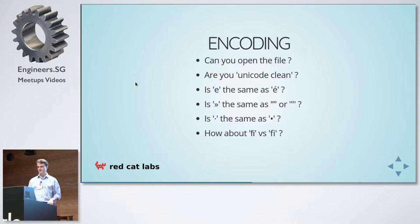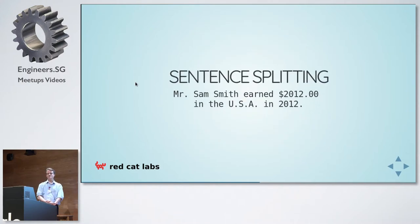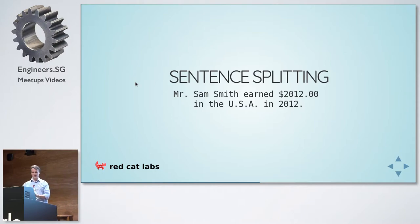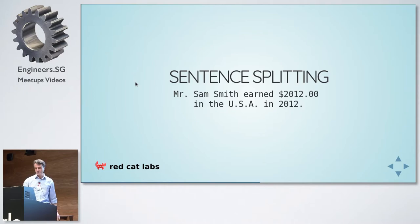Sentence splitting: it seems pretty obvious when a sentence ends because it has a full stop at the end, right? Except that this example sentence has only one full stop — the rest are abbreviations, a decimal point, and an acronym. But there are nice libraries which can do this. NLTK doesn't have many uses, but it can do this quite well.